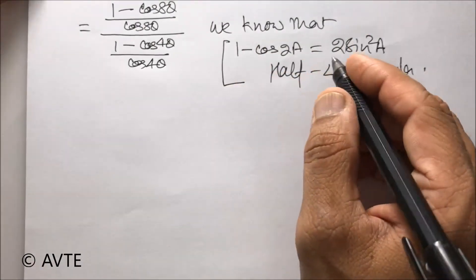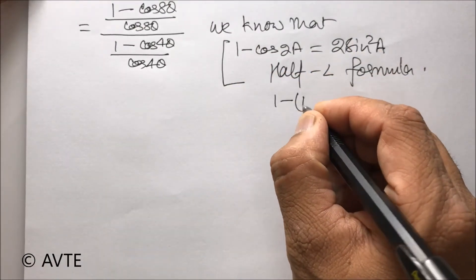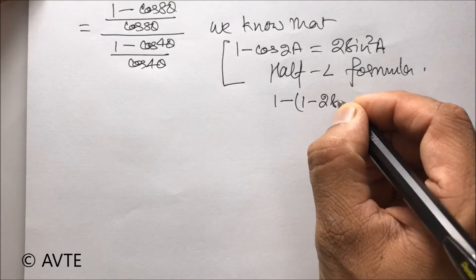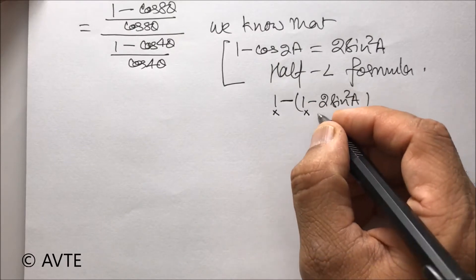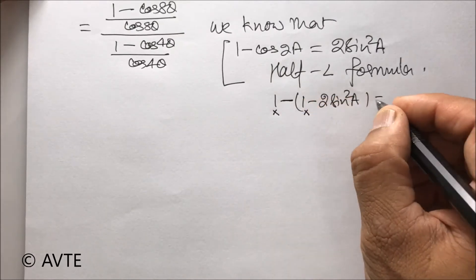Why 1 minus cos 2a is 2 sine square a? This is very easy to understand because cos 2a is 1 minus 2 sine square a and this is minus outside the bracket. So this 1 and minus 1 is gone and this minus and minus is plus.